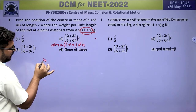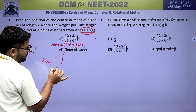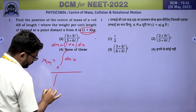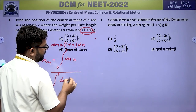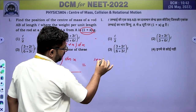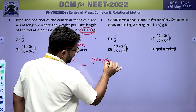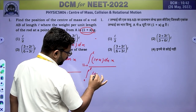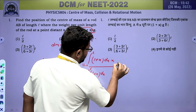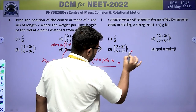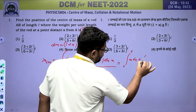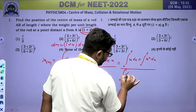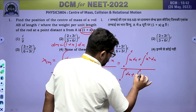We know that the x-component of centre of mass is given by integration from 0 to L of x·dm divided by integration from 0 to L of dm. So the numerator becomes integration from 0 to L of (1+x)·x dx, and the denominator is integration from 0 to L of (1+x)dx, which expands to: numerator: integral of x dx plus integral of x² dx; denominator: integral of dx plus integral of x dx.